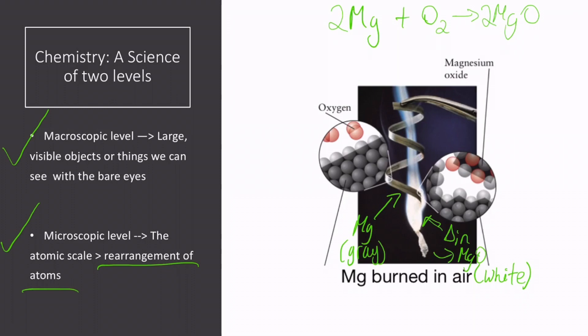At the microscopic scale, Magnesium atoms interact with oxygen from air. Upon applying the source of heat, the Magnesium atoms start to react with oxygen in a 1 to 1 ratio of Magnesium to oxygen atoms. We will see in future lectures why this happens.